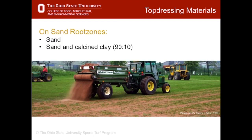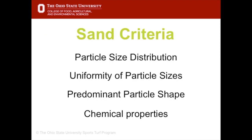On sand root zones, top dressing materials are generally composed of pure, clean sand or a combination of sand and calcine clay. The calcine clay is sometimes added to help retain moisture. Not all sands are the same. There are specific criteria for sands used on native soil or sand root zones. Particle size distribution, uniformity, shape and chemical makeup are all important factors. Local sand suppliers should be able to offer information on their sand products that include details of each of these criteria.